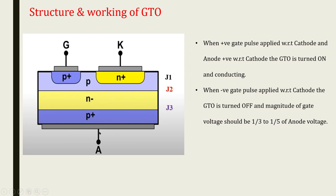When a positive gate pulse is applied with respect to cathode and crosses the threshold voltage, the GTO turns on. When a negative gate pulse is applied with respect to cathode and crosses the threshold voltage — which should be between one-third and one-fifth of the anode voltage — the GTO turns off.